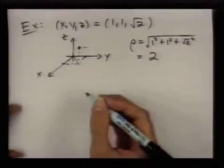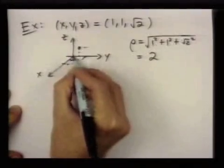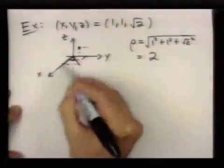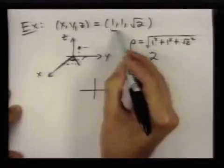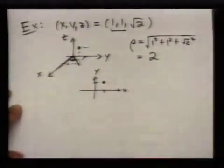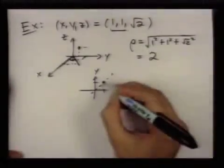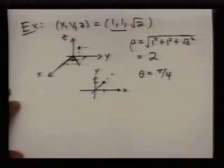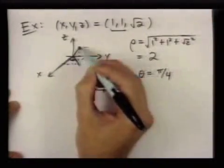Let me figure out theta first. Theta is the angle between the x-axis and the projection of the point down to the xy-plane. On the xy-plane, I just look at the point (1, 1), and that angle is 45 degrees, or pi over four. So theta equals pi over four. Now to figure out phi, I look at a triangle in the picture.